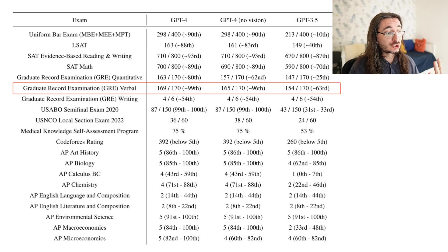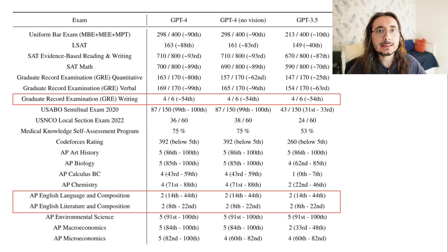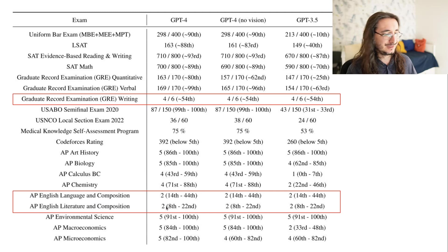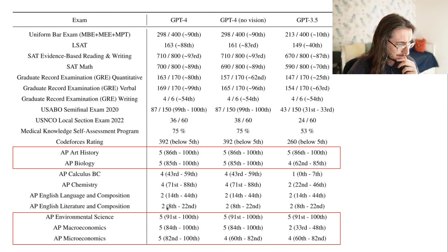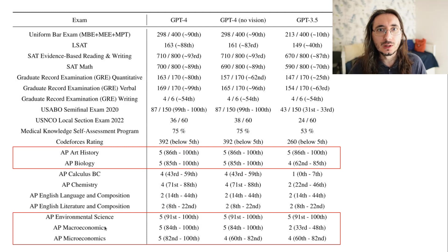The model does extremely well on verbal skills, reaching the 99th percentile, which is quite remarkable. Where the model is a little weaker is in composition — basically writing and generating text. In the GRE writing exam it's at the 54th percentile, and in AP English literature and composition it doesn't perform very well at all, sitting at a very low percentile. However, looking at more notion-based exams like AP art history, biology, or environmental science, the model does really well and is capable of reasoning on notions quite effectively.